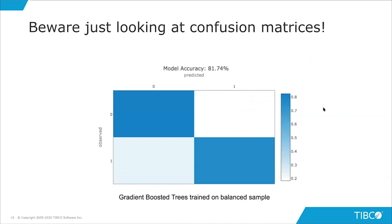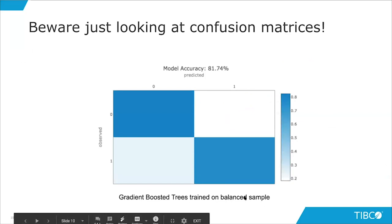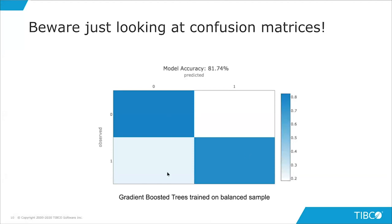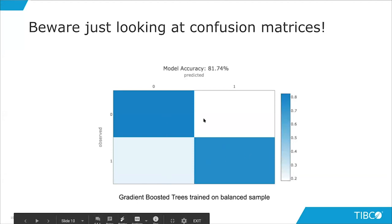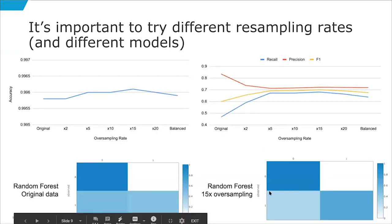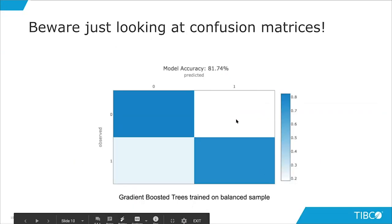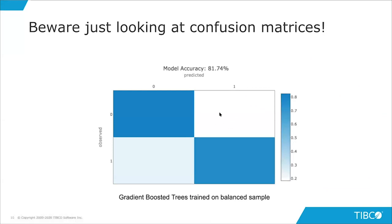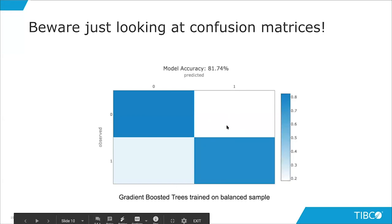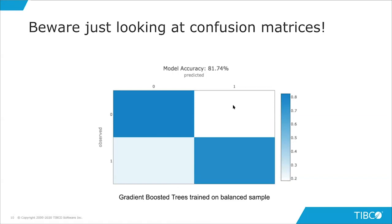Taking the balanced sample — 50% ones and zeros — with gradient boosted trees looks like the best confusion matrix overall, even better than random forest at 15x oversampling. However, hidden by the confusion matrix is the fact that we're really over-predicting ones. The precision, while recall is through the roof, is actually very bad with gradient boosted trees.